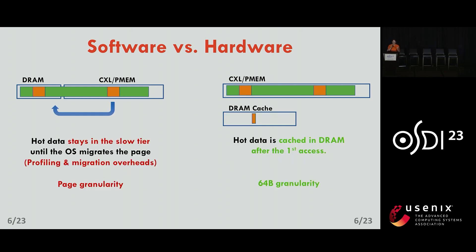What does this mean for hot data? When the tiers are managed in software by the operating system, it's possible for a hot page to be initially allocated in the slow tier. The hot pages — frequently accessed pages, shown in orange — might stay in the slow tier forever, at least as long as the operating system doesn't take any action. So the operating system absolutely has to profile memory accesses and migrate data to DRAM when it is frequently accessed.